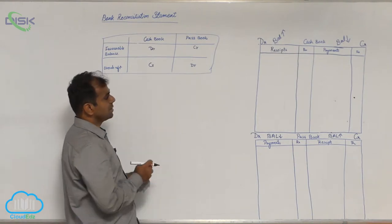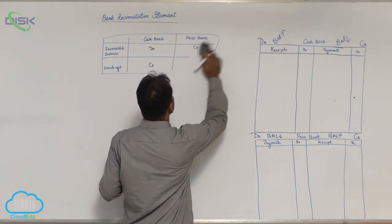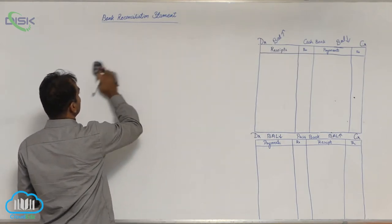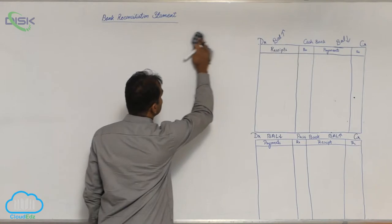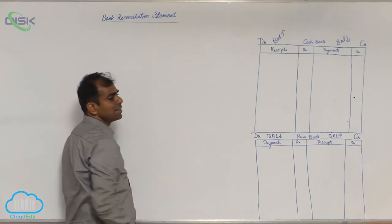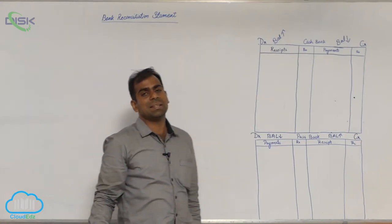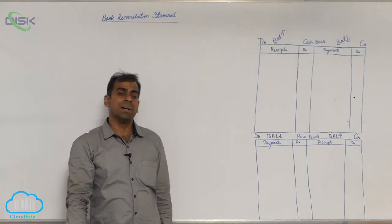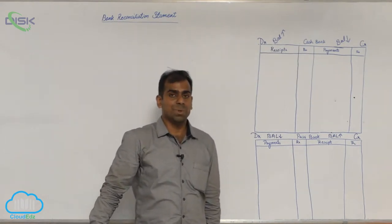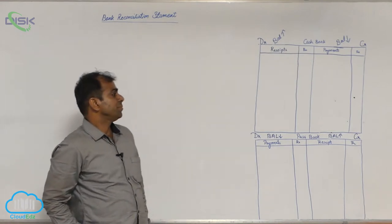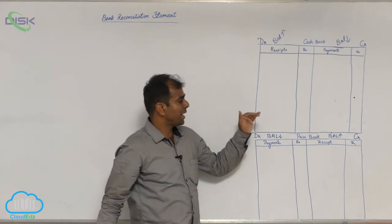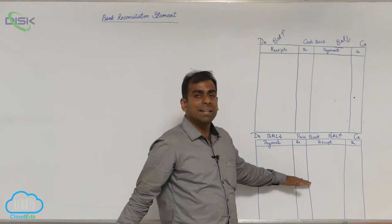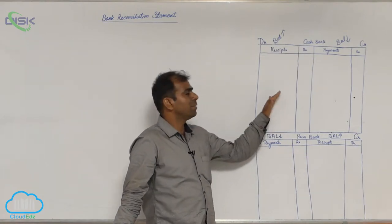Always remember this when doing problems: when simply the word 'balance' is used — as per cash book or as per pass book — it means favorable balance as per cash book or favorable balance as per pass book. Now, I have modified the pass book format for better understanding, similar to that of the cash book.